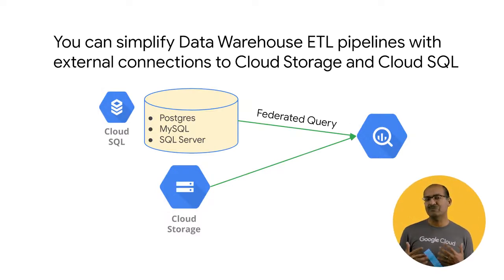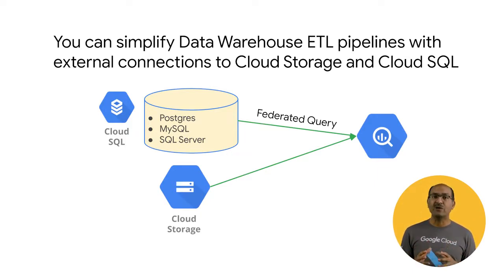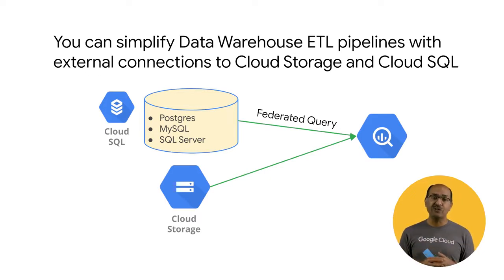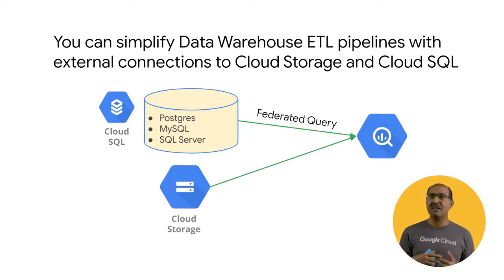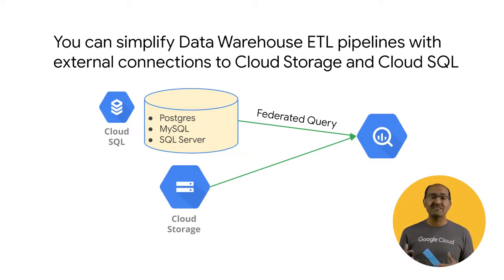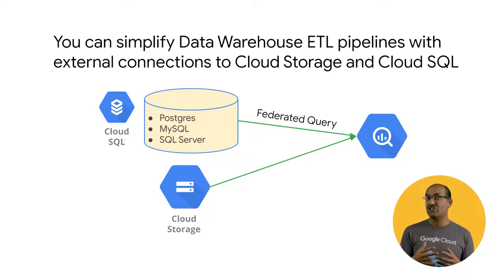Even though we talked about getting data into BigQuery by running ETL pipelines, there is another option — to treat BigQuery as just a query engine and allow it to query the data in the data lake, data in place. For example, you can use BigQuery to directly query database data in Cloud SQL, that is, managed relational databases like Postgres, MySQL, and SQL Server. You can also use BigQuery to directly query files in Cloud Storage, as long as those files are in formats like CSV or Parquet. The real power comes when you can leave your data in place and still join it against other data in the data warehouse. Let's take a look.